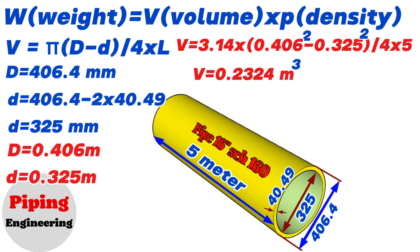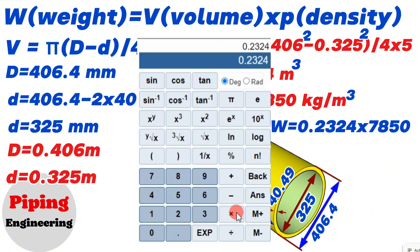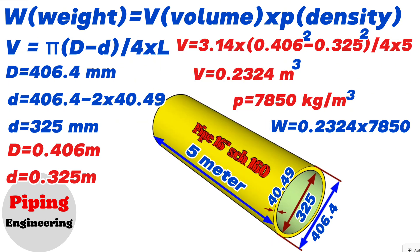We already know that the iron steel density is 7850 kg per cubic meter. Now let's write this into the weight calculation formula. Weight equals volume 0.2324 cubic meters multiplied by the density 7850 kg per cubic meter. Using the calculator, we find that 0.2324 × 7850 equals 1824. So the weight of the 16 inch schedule 160 pipe in our example is 1824 kg.